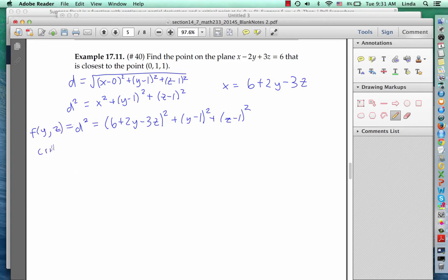So let's find the critical points. f sub y is given by 2 times 6 plus 2y minus 3z times 2, using the chain rule, plus 2 times y minus 1 times 1. Now, we could have also taken the derivative after first multiplying this out. I just find this a little bit easier to do it this way. If we simplify here, we get 24 plus 8y minus 12z plus 2y minus 2, which works out to 22 plus 10y minus 12z.